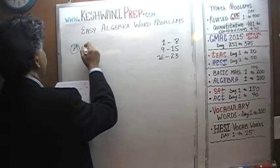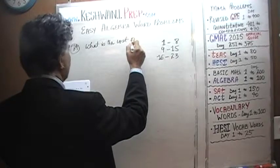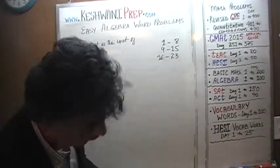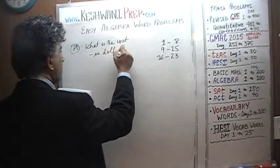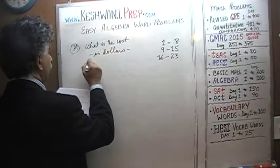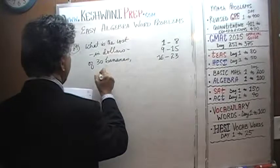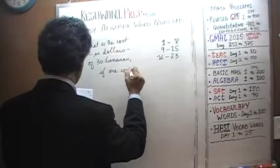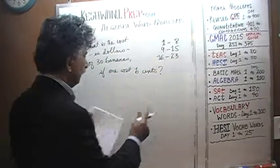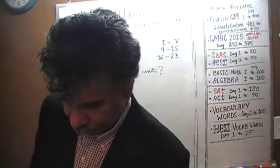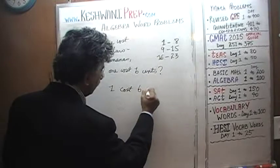What is the cost in dollars of 30 bananas if 1 costs B cents? We are told that 1 costs B cents.